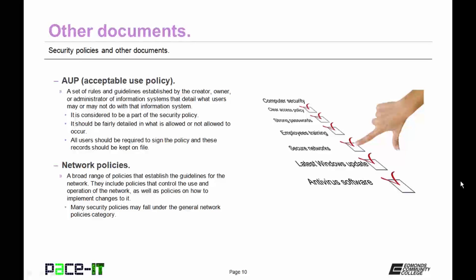Then there are Network Policy Documents — a broad range of policies that establish the guidelines for the network. They include policies that control the use and operation of the network as well as policies on how to implement changes to it. Many security policies fall under the General Network Policies category.